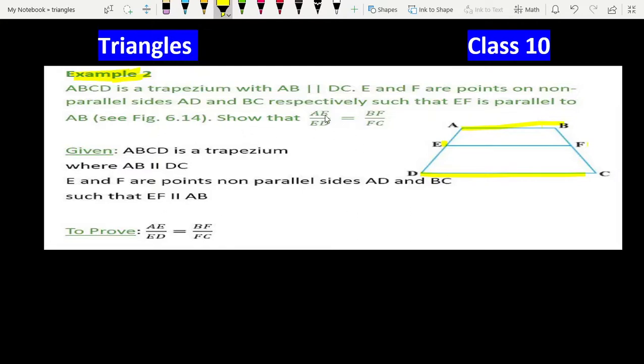So we have to prove that AE upon ED equals BF upon FC. So given, it has written and to prove. So let's start the proof.